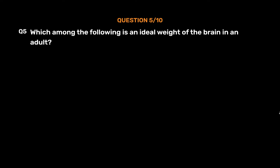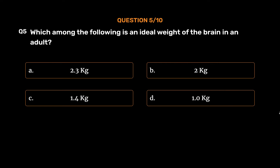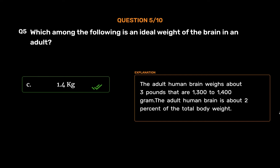Question No. 5. Which among the following is an ideal weight of the brain in an adult? Option A: 2.3 kg. Option B: 2 kg. Option C: 1.4 kg. Option D: 1.0 kg. The correct answer is Option C: 1.4 kg. The adult human brain weighs about 3 pounds, that is 1300 to 1400 grams. The adult human brain is about 2% of the total body weight.